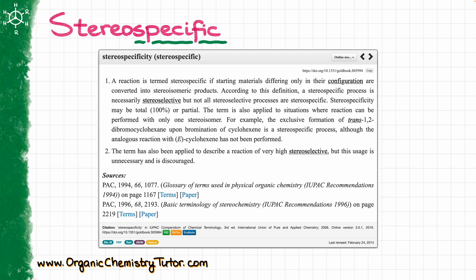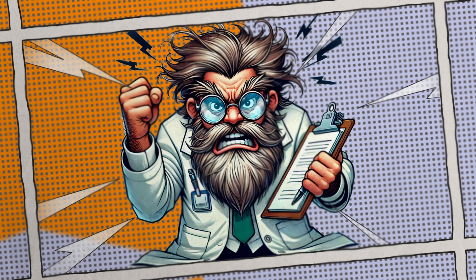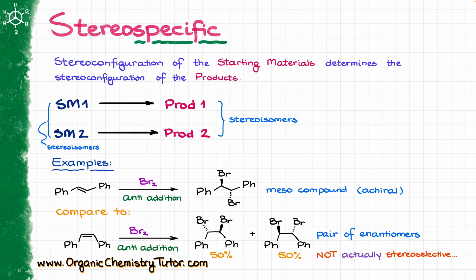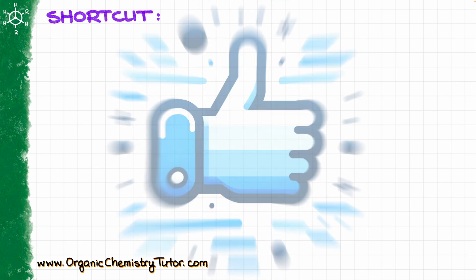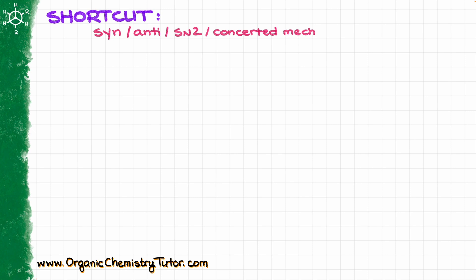So if it were up to me, I would take the definition of stereospecific reactions and scratch out the part that says all stereospecific reactions are also stereoselective, because as I've just demonstrated, we have a problem with that. But at the end of the day, I'm just an old chemist yelling into the void. Anyway, coming back to stereospecific reactions — there is a helpful shortcut: as soon as you hear that the mechanism for your reaction is going to be syn, or anti, or an SN2-style reaction, or in general any concerted mechanism, in all of those cases you can automatically think that this is going to be a stereospecific reaction.